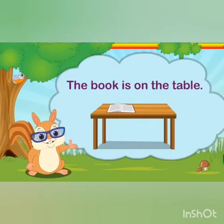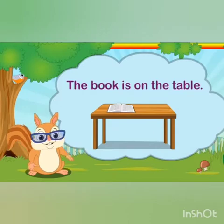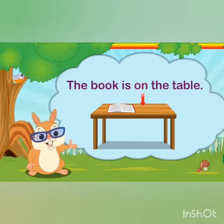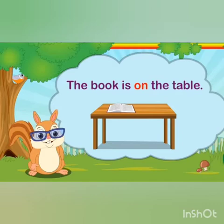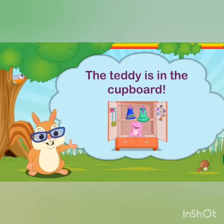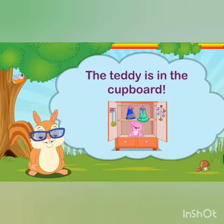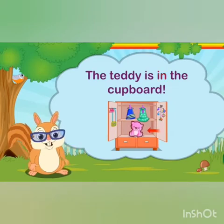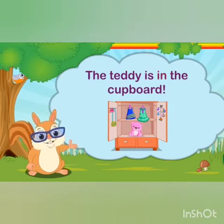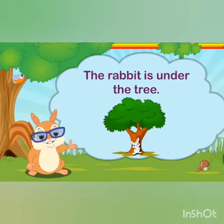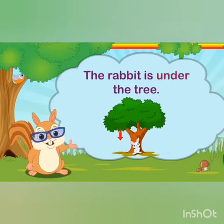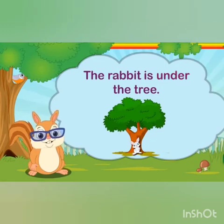The book is on the table. Here, 'on' tells us where the book is. So 'on' is a preposition. The teddy is in the cupboard. Here, 'in' tells us where the teddy is. So 'in' is a preposition. The rabbit is under the tree. Here, 'under' tells us where the rabbit is. So 'under' is a preposition.